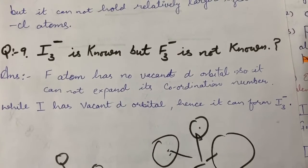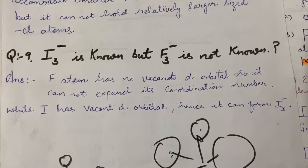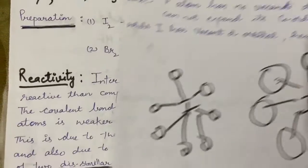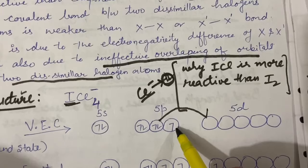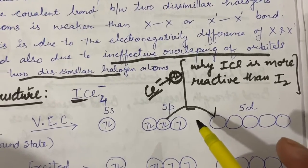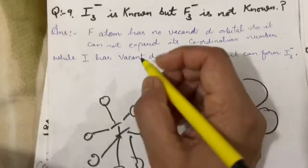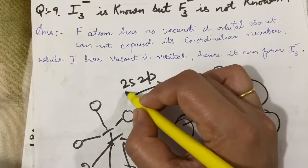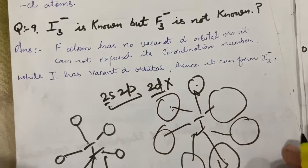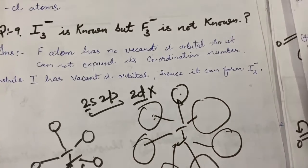Similarly, the next question: I3⁻ is known but F3⁻ is not known. In I3⁻ there are 3 iodine atoms; in F3⁻ there would be 3 F atoms. But fluorine does not have empty d-orbitals. If it has no empty d-orbital, it has only one unpaired electron and can form only one bond with another atom, like F₂. If there were an empty d-orbital, it could expand its coordination. But for fluorine, the valence configuration is 2s² 2p⁵, and for quantum number 2, a 2d orbital is not possible - 2d does not exist. So fluorine has no empty d-orbital and cannot expand its coordination. That's why F3⁻ ion is not known.